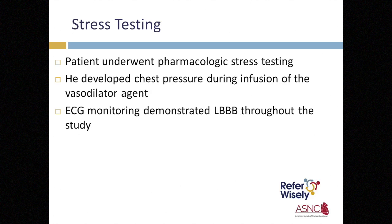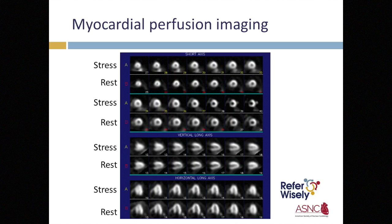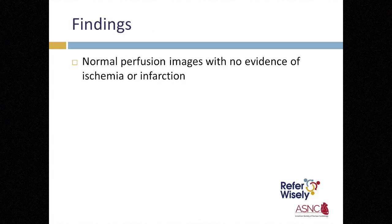Returning to our patient, he underwent a pharmacologic stress test to avoid the artifacts that can be seen with exercise. He developed transient chest pain during the vasodilator stress test but remained hemodynamically stable. ECG monitoring demonstrated the continued presence of his left bundle branch block. The radionuclide myocardial perfusion study images are shown in short axis on the top panels, vertical long axis in the middle, and horizontal long axis at the bottom. Visual and quantitative interpretation revealed no perfusion abnormalities, and the left ventricular ejection fraction was normal — a normal study.